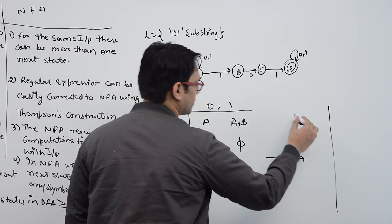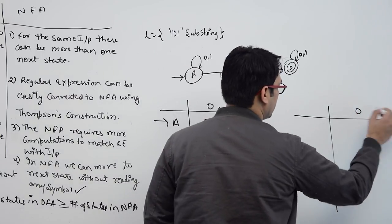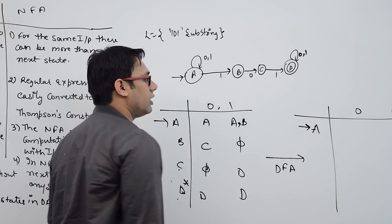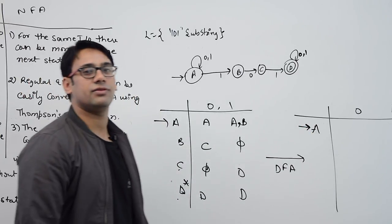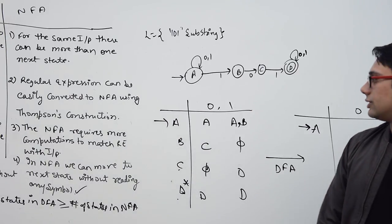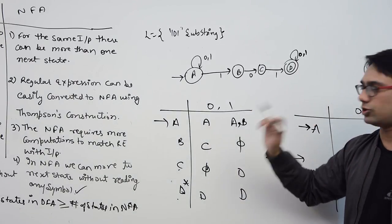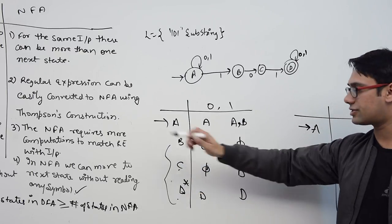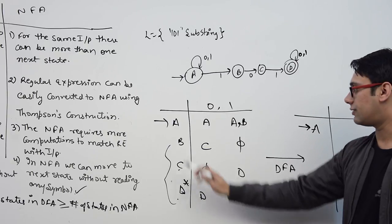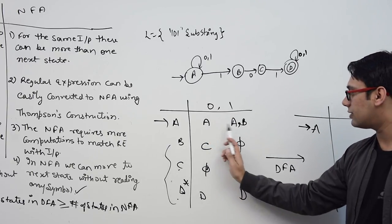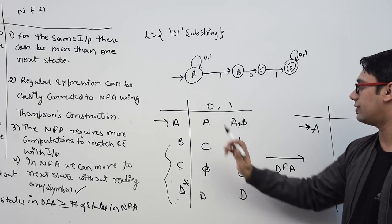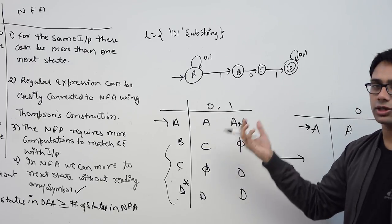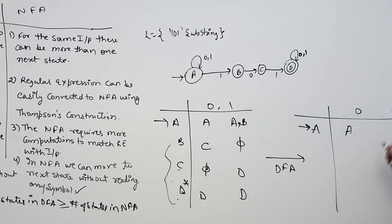Now let us make an equivalent DFA. We have columns for 0 and 1, and the initial state is A. When converting any NFA to DFA, take the first state only and don't consider the other states at the beginning. From A on 0 we go to state A. On 1 we go to states A and B — combine them into a single state AB.